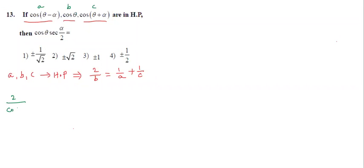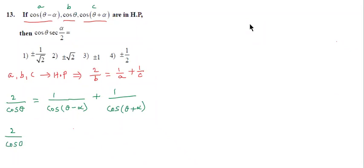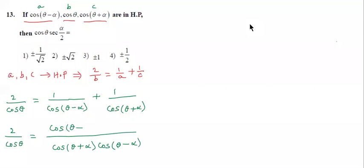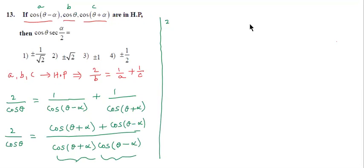So 2/cos θ = 1/cos(θ − α) + 1/cos(θ + α). On the right-hand side, take LCM: the denominator becomes cos(θ + α)·cos(θ − α). Now take cross multiplication: 2 cos(θ + α)·cos(θ − α). This is in the form cos(A+B)·cos(A−B).